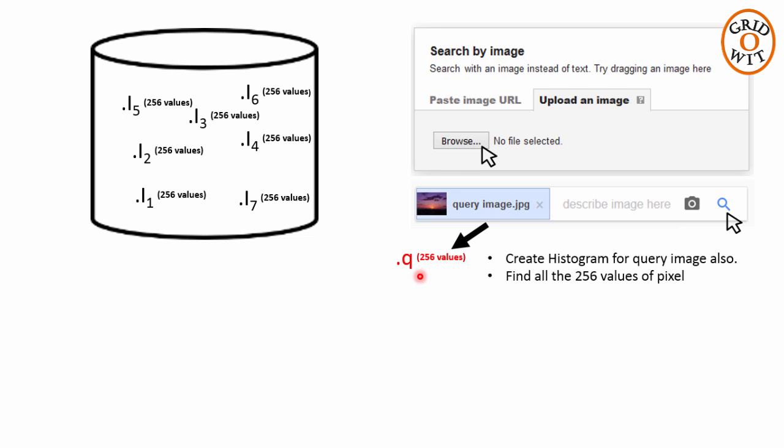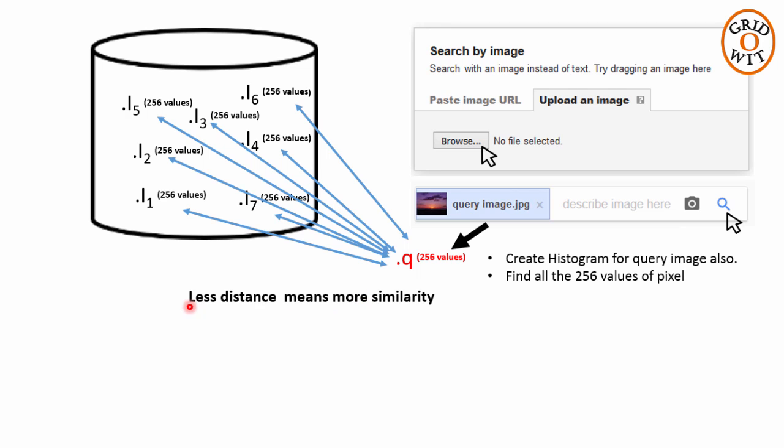Then using some distance function we can calculate the distance of the query image with all other images in the database. Less the distance value more is the similarity. So we can retrieve images and display results.